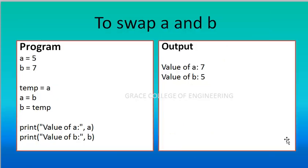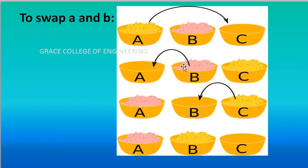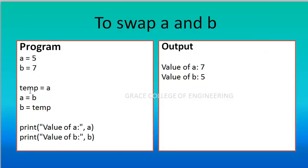Let's see the program. A is equal to 5 — the value 5 is stored in variable A. The value 7 is stored in variable B. Here we are going to use three steps using a temporary variable. The value stored in A, that is 5, will be stored in temp. The value in A is moved to the temporary variable.